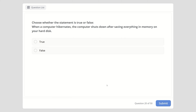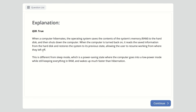Question twenty: True or false — when a computer hibernates, the computer shuts down after saving everything in memory on your hard disk. This is true. When a computer hibernates, the OS saves the contents of RAM to the hard disk and then shuts down. When powered back on, it reads the saved information and restores the system to its previous state. This differs from sleep mode, where the computer stays in a low-power state keeping everything in RAM and wakes up much faster.